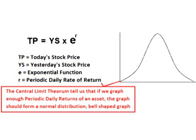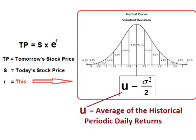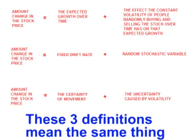Today's stock price equals yesterday's stock price times e raised to r. The r value is a periodic rate of change or return. Because the stock can go up or down any percentage each day, the central limit theorem tells us that if we graph enough of these r values, the graph will form a normal distribution bell-shaped graph. This means we can assume that the rates of daily change in price in the future will also be normally distributed — using the historical standard deviation and using the drift as the mean. We know this is not technically true, but it is close enough for modeling purposes. And that's Brownian motion applied to an asset.